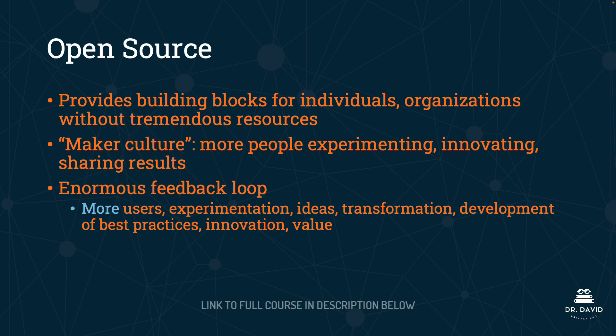Having access to open source models and code is another really important feature of AI software right now. Open source code and algorithms provide building blocks for individuals and organizations without tremendous resources. If you think back to the graph from the Stanford Institute of Human-Centered Artificial Intelligence, it showed how expensive training foundation models has become over the last six or seven years. Google's Gemini Ultra in 2023 cost almost $200 million to train — not everyone has those types of resources; really only big tech can do that. So open source is a way for everyday folks and organizations without a lot of resources to be able to use and work with AI.